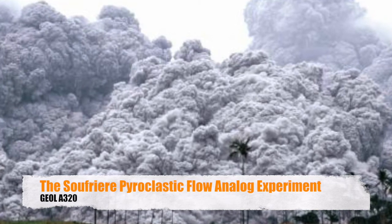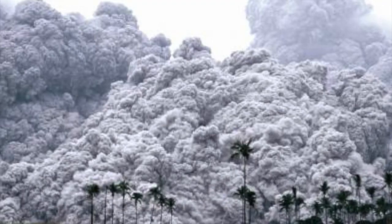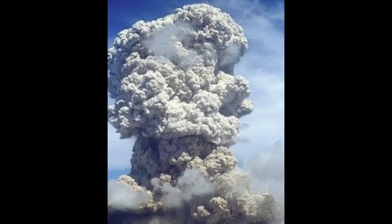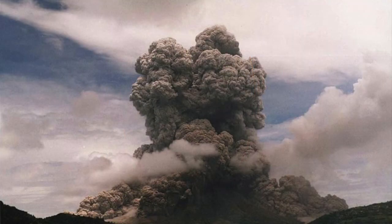A pyroclastic flow, also known as a pyroclastic density current or PDC, occurs when a buildup of material and gases creates pressure within the dome of an active volcano. This pressure breaks the dome and is shot upwards rapidly. This column of materials and gas are briefly contained in the air, but as it completely depressurizes, it collapses and flows down the sides of the volcano.